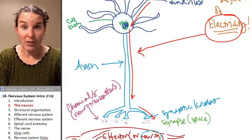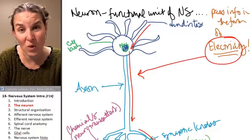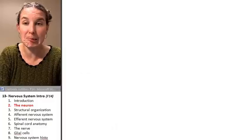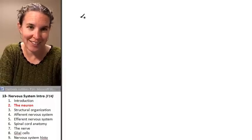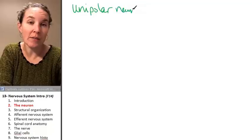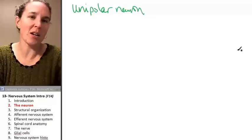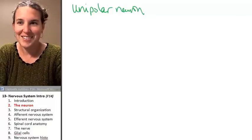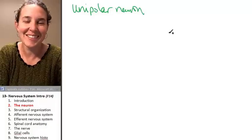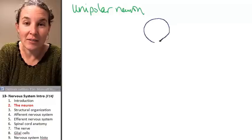Do all neurons look like this? No. Of course not. And in fact, I'm going to draw you one more neuron. I'm going to draw you a neuron called a unipolar neuron. I kind of want to check really fast. That's what I'm talking about. It is a unipolar neuron. In a unipolar neuron, you have a cell body just like normal, but look at this.